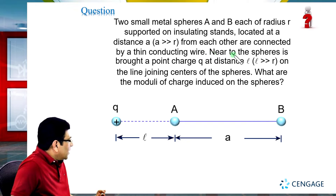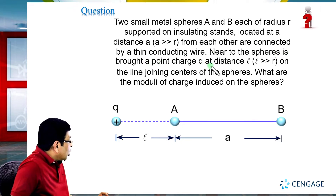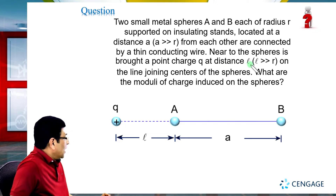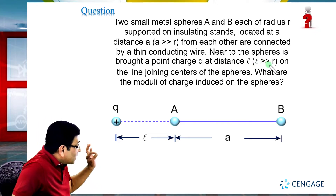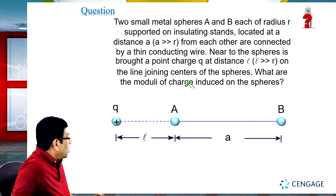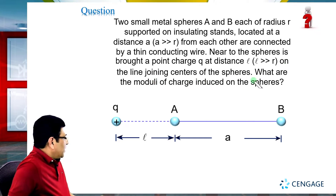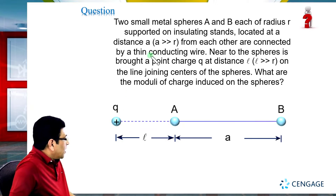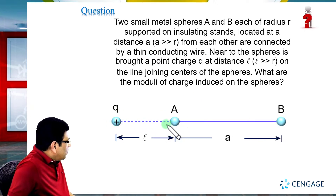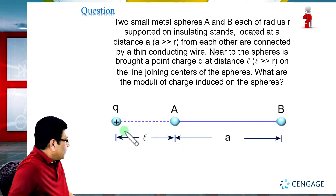The next part of the question says: near to sphere A is a point charge small q at a distance small l, where small l is much greater than small r, on the line joining the centers of the spheres. You can see in the diagram that the point charge of magnitude small q is located along this line.